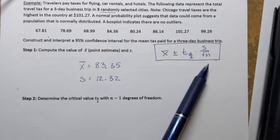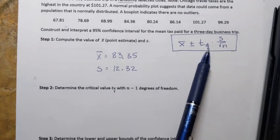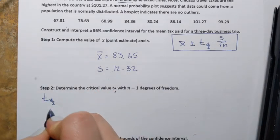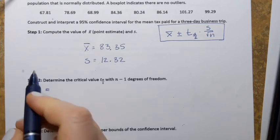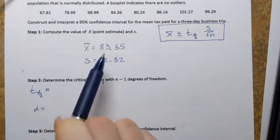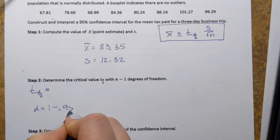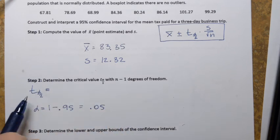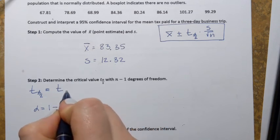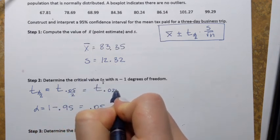Step two is to determine the critical value t(α/2). Alpha corresponds to the level of confidence: if the confidence level is 95%, then α = 1 − 0.95 = 0.05. Therefore α/2 = 0.05/2 = 0.025. My goal is to find the t value corresponding to an area of 0.025 to the right.